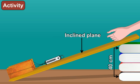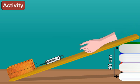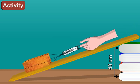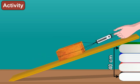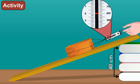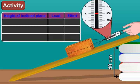Now, keep the wooden block on the inclined plane and pull the block with the spring balance so that the block just moves up the inclined plane. Take the reading on the spring balance and fill in the table.